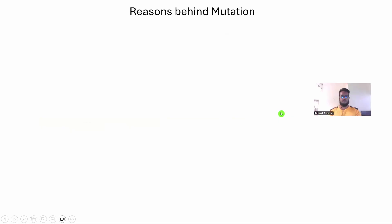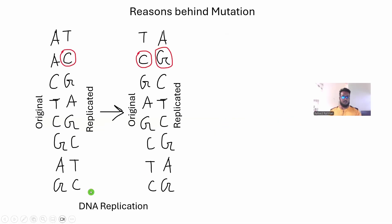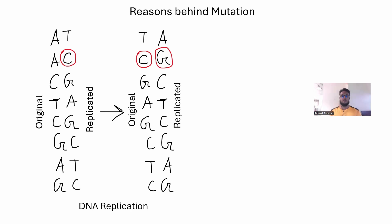Now let's talk about the reasons behind mutation. One major reason is error in DNA replication. This is the original strand, and this is the replicated strand created using DNA polymerase. It is supposed to have the complementary bases, but you can see there is one mistake in the replication process. This kind of mistake can especially happen if your body is under stress — for example if you have cancer and cells are growing uncontrollably. In normal humans it is much rarer and there are repair mechanisms.